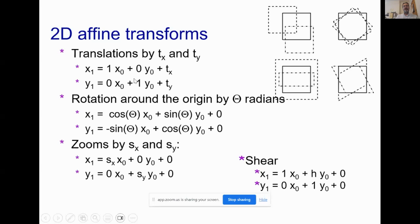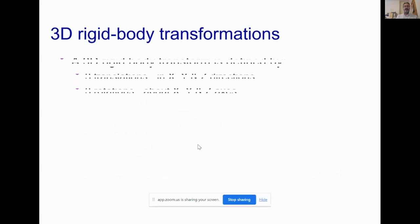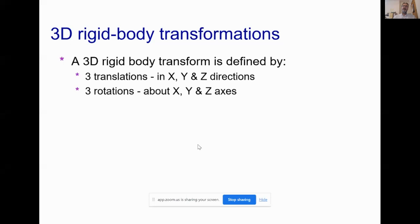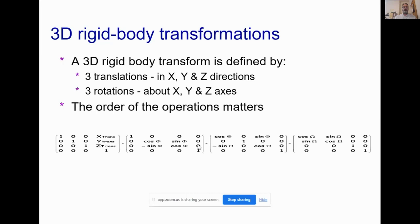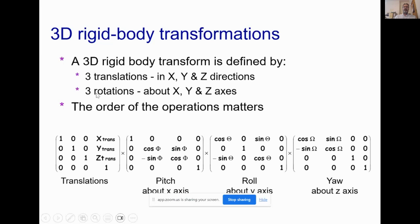All these operations — translations, rotations, zooms, and shears — can be conceptualized as affine matrix multiplications. For translations, we have an identity matrix plus some offsets. For rotations, we have a matrix of cosines and sines. This also applies in 3D, where we can parameterize a rigid body transform by six parameters: three translation directions and three rotation axes. We construct an affine transformation matrix by multiplying together the translation matrix and the matrices encoding pitch, roll, and yaw.